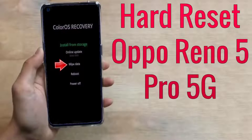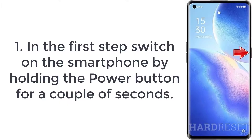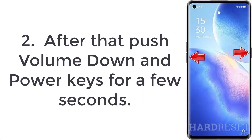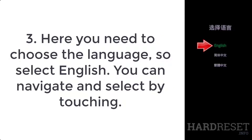How to hard reset Oppo Reno 5 Pro 5G. Step 1: switch on the smartphone by holding the power button for a couple of seconds. Step 2: push the volume down and power keys for a few seconds. Step 3: choose the language — select English. You can navigate and select by touching.